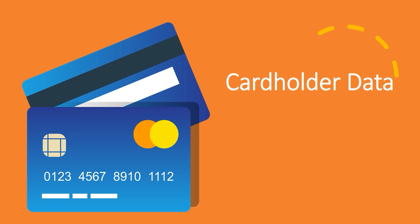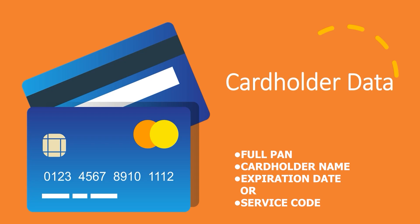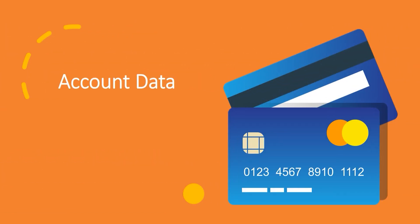Cardholder data may appear as the full PAN or Primary Account Number, plus cardholder name, expiration date, or service code. Account data consists of cardholder data and Sensitive Authentication Data. I know it's starting to sound confusing, but if you feel you need to watch this video again, please do so — it's really important that you fully understand this terminology.